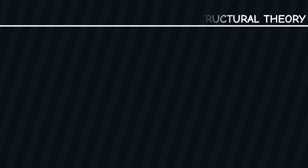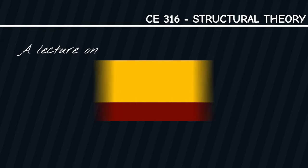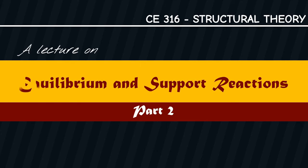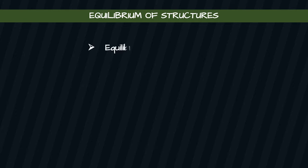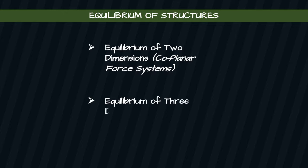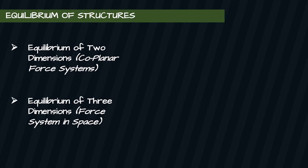Hello, future engineer! Welcome back to our lecture on Equilibrium and Support Reactions, Part 2. We are already familiar with supports and support reactions. This time we will focus on equilibrium. This will serve as a review before you proceed to the next discussion. Be sure to view Equilibrium and Support Reactions Part 1 first — the link is attached in the description box below. There are two major scenarios in equilibrium of structures: equilibrium of two dimensions (coplanar force system) and equilibrium of three dimensions, or force system in space.